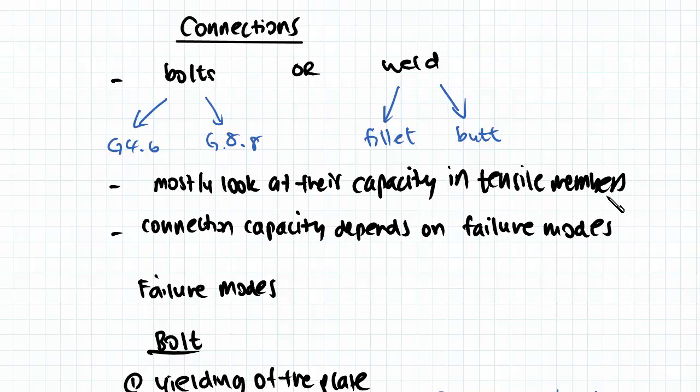So far we've actually encountered connections only in the tension chapter and we've assumed that the tension capacity is not critical when it comes to connections. We've assumed the critical capacity is only based on the sections themselves and not the connection, so when a member is put into tension we've always only assumed that the section would fail first rather than the connection.